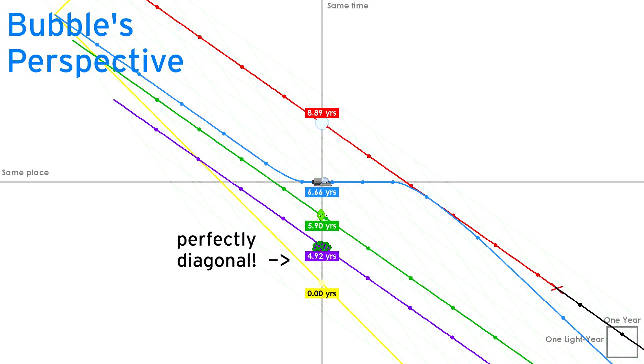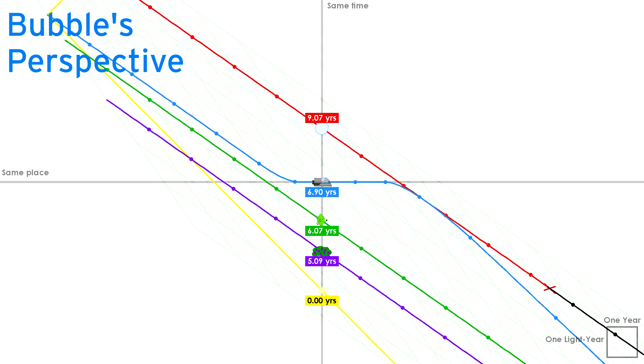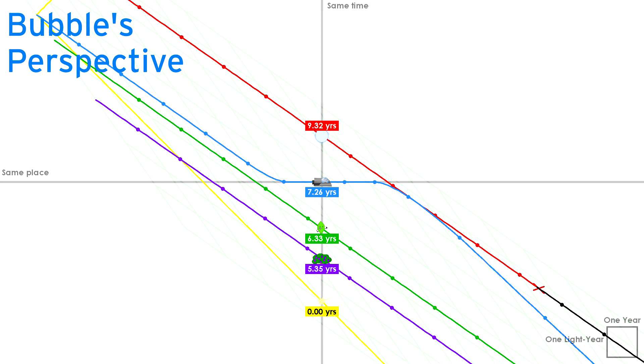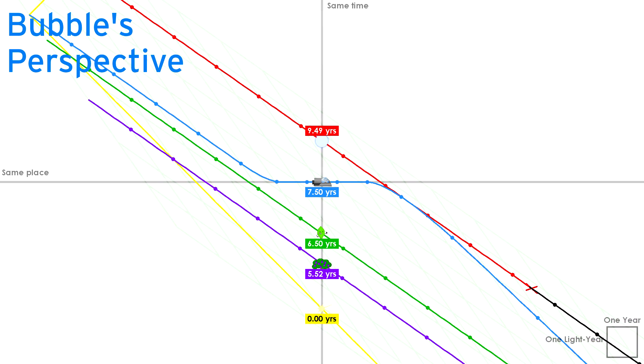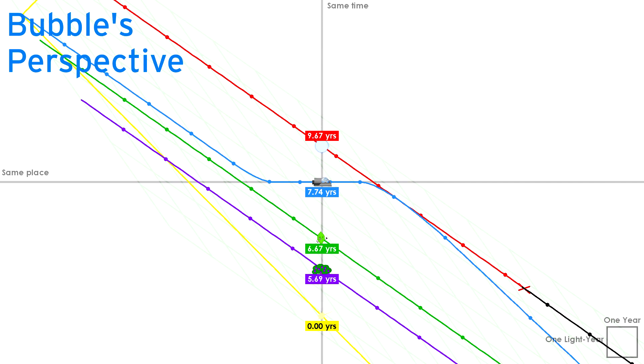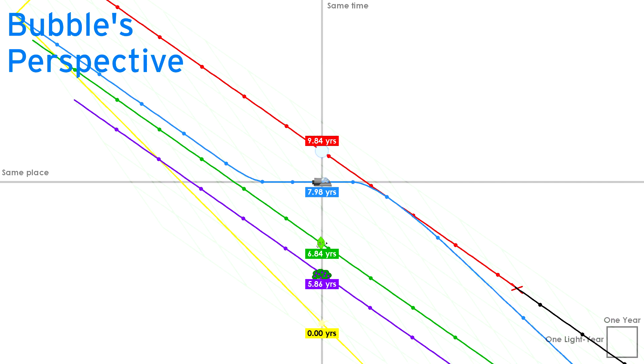Which, astonishingly, they still are! That means the speed of light is still one light year per year, even though Bubble is going very quickly north relative to Leafy. Of course, from her own frame of reference, she's still perfectly still.